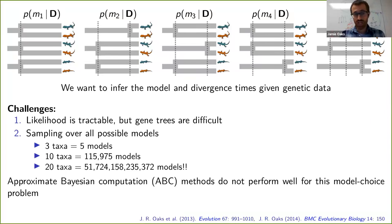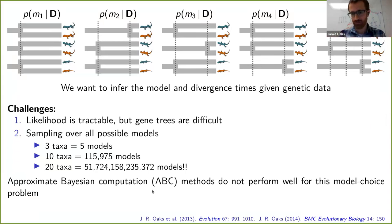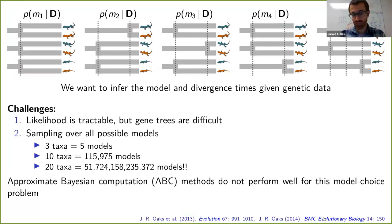Due to these challenges, this inference problem has been largely restricted to approximate methods — approximate Bayesian computation, or ABC — which use simulations to avoid doing anything with the likelihood. But my prior work in my PhD and postdoc found that these ABC methods don't actually perform very well for this particular model choice problem. So we need a different approach.